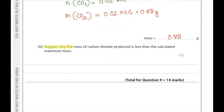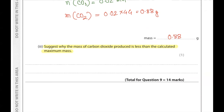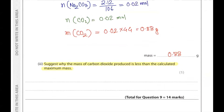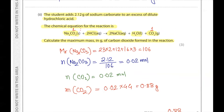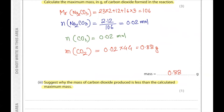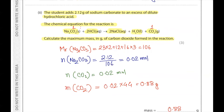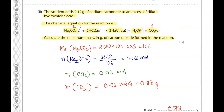Part 3. Suggest why the mass of carbon dioxide produced is less than the calculated maximum mass. This could be because the sodium carbonate used in the experiment is not pure, or some of the carbon dioxide produced does not escape as a gas but instead dissolves into the water.